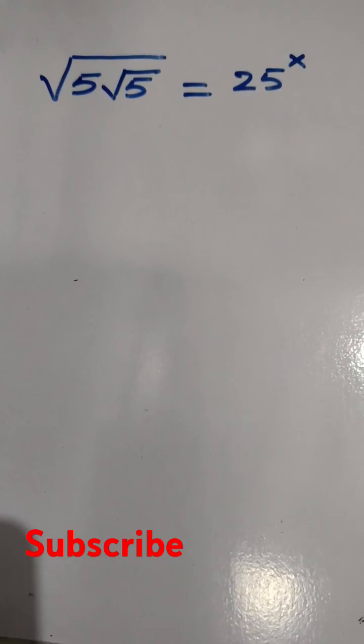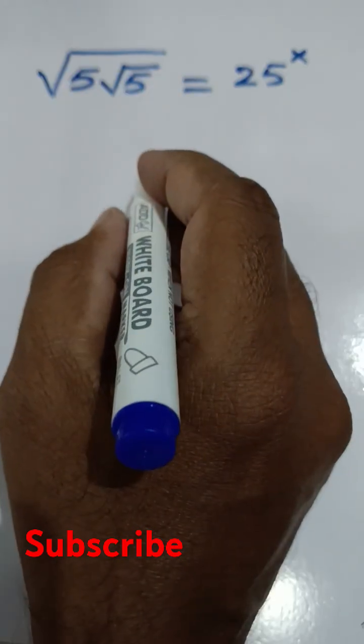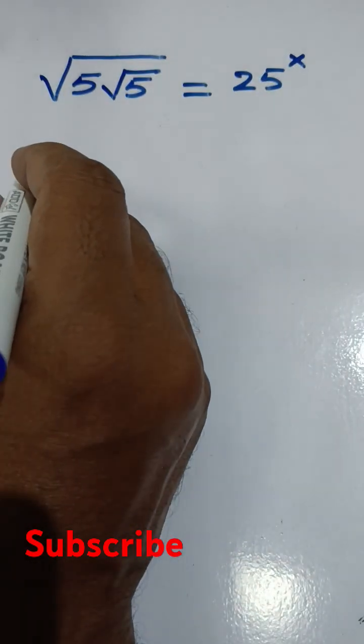The square root of 5√5 equals 25 to the power of x is the given equation, and we have to find the value of x.